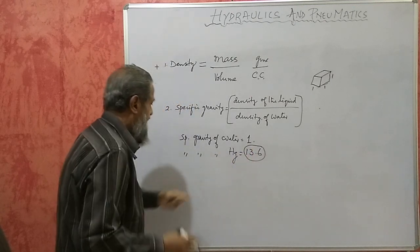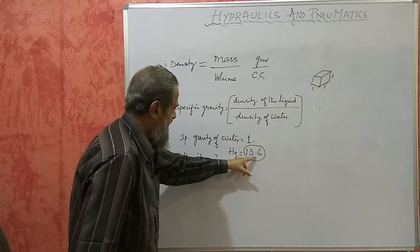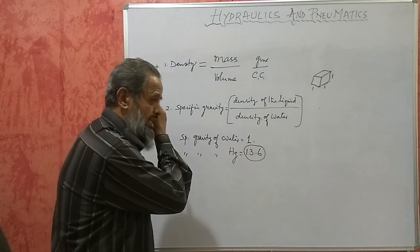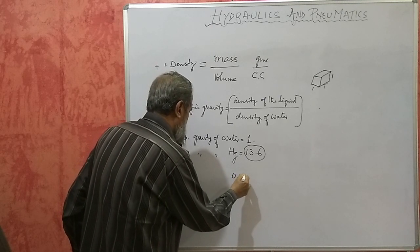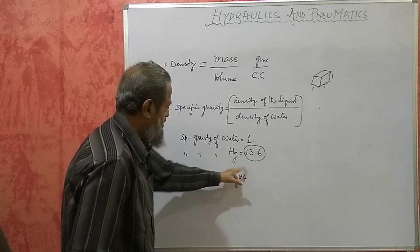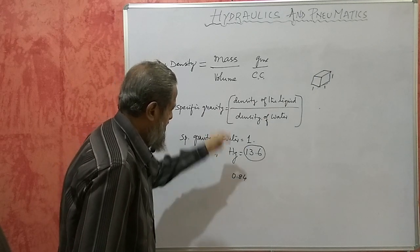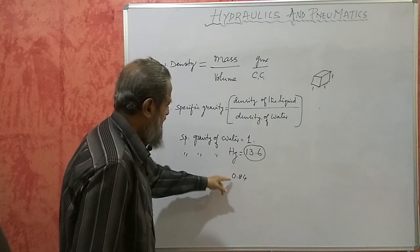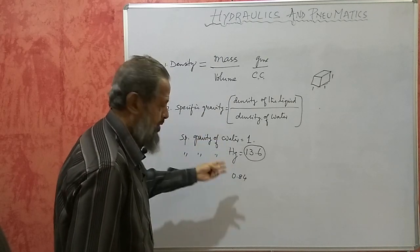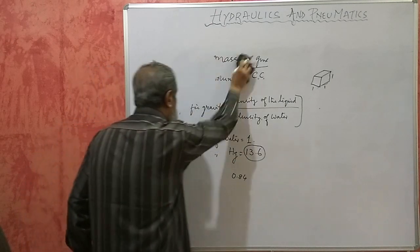Specific gravity of water is 1 gram per cc divided by 1 gram per cc, which equals 1. Specific gravity of mercury is 13.6, since its density is 13.6 g/cc and water's density is 1 g/cc. The difference between density and specific gravity: density is given with a unit; specific gravity is a dimensionless number — numerically the values are the same. This number indicates whether a liquid is heavier or lighter than water: greater than 1 means heavier, less than 1 means lighter. For example, petrol has a specific gravity of about 0.82–0.84, so it floats on water, while mercury sinks because it is heavier than water.